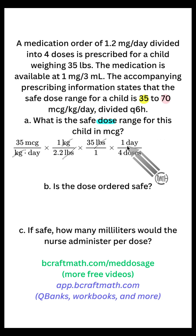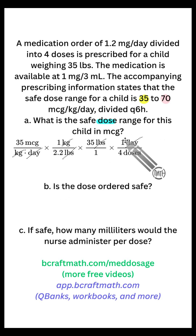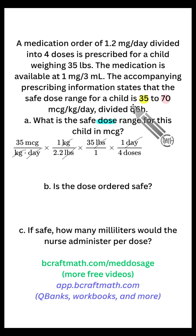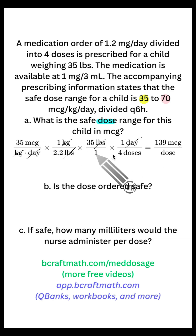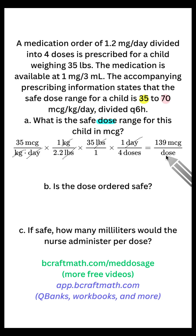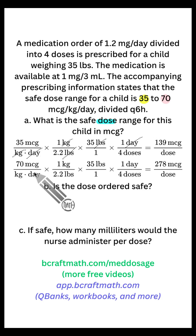I'm actually going to show that in my dimensional analysis, canceling out the day: in one day, that is four doses — because every six hours over the course of a 24-hour day would be four doses. If you multiply your top numbers and divide by your bottom numbers, rounding to the nearest whole number, that gives us 139 micrograms per dose — not per day. This is the low end for the child.